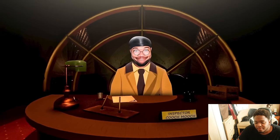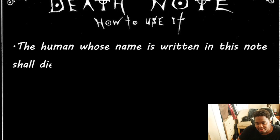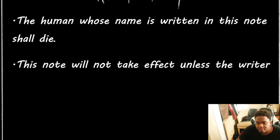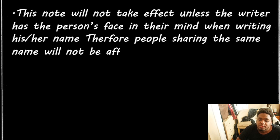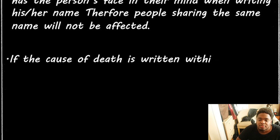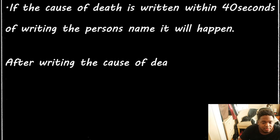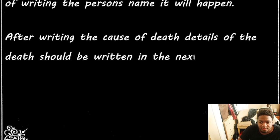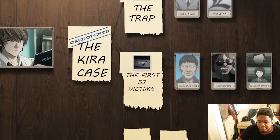That's why we're here. First off, we need to know what the weapon was to commit all these homicides — and that is the Death Note. Here's a quick refresher: the human whose name is written in this note shall die. The note won't take effect unless the writer has the person's face in mind. If the cause of death is written within 40 seconds, it will happen, and details must be written in the next six minutes and forty seconds.